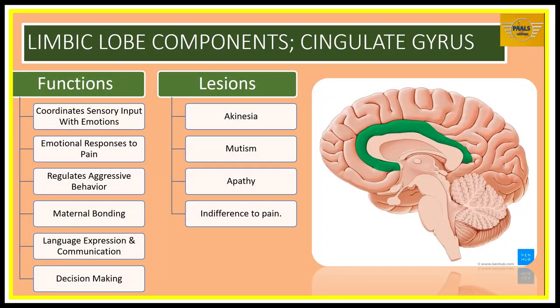Looking at the functions and lesions of the cingulate gyrus: it coordinates sensory inputs with emotions, coordinates emotional response to pain, regulates aggressive behavior, affects maternal bonding, language expression and communication, and decision making. When we have a lesion of the cingulate gyrus, conditions noted include akinesia (a movement disorder characterized by slow repetitive movement), mutism (inability to speak), apathy (lack of motivation or care and concern), and indifference to pain.